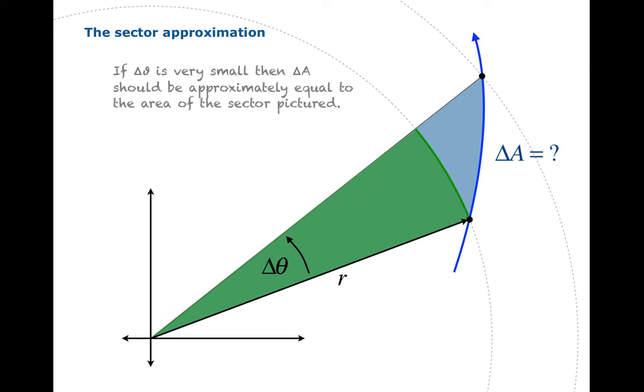If delta theta is pretty small, then the blue area we wanted to approximate in the first place should be approximately equal to the green area of the sector. Now, in fact, this picture does not have a small delta theta. So it doesn't perhaps look all that close. But generally we hope that delta A is going to be approximately equal to one-half R squared delta theta, which is the area formula for the sector of a circle of radius R and angular width delta theta.